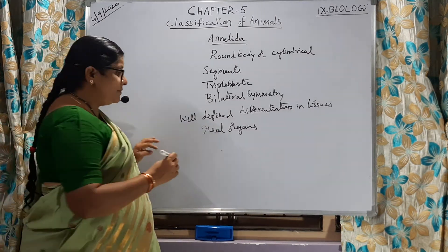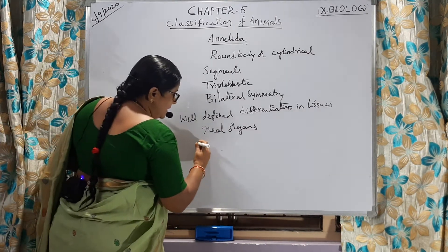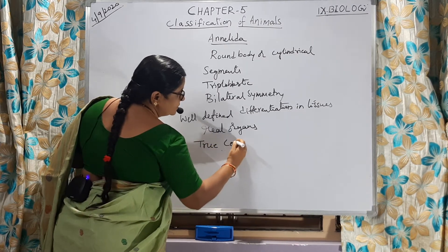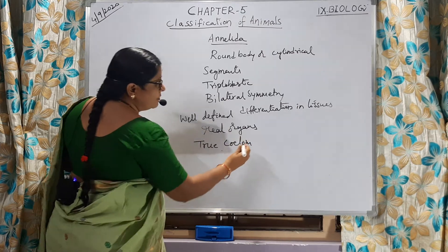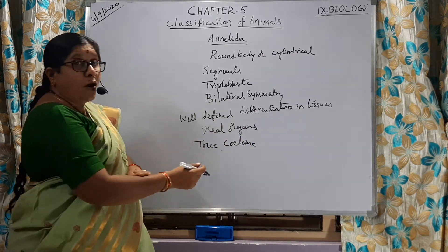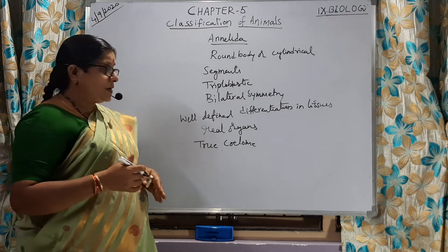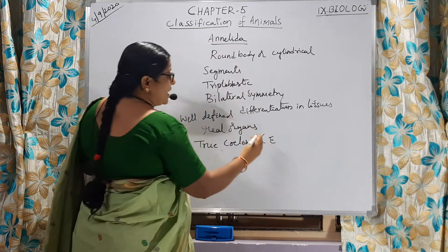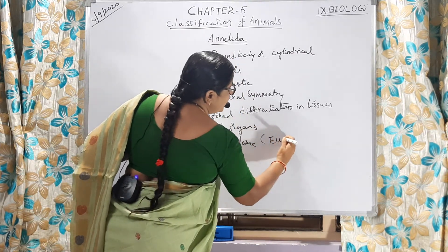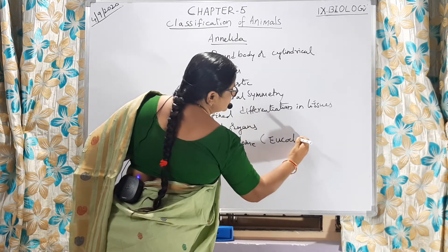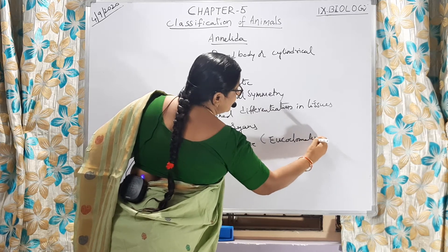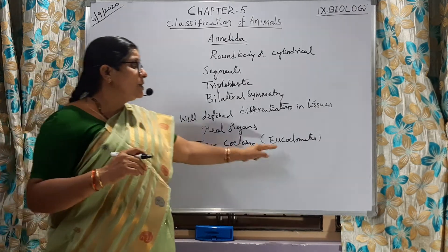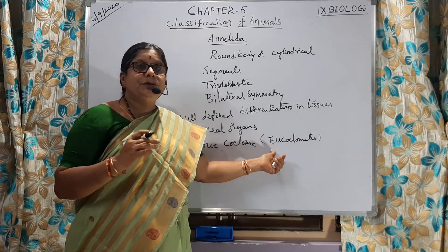These organs are present in the true coelom. What is a true coelom? A real body cavity is present, and that is why Annelida organisms are called eucoelomate animals — true body cavity is observed, so they are eucoelomate animals.